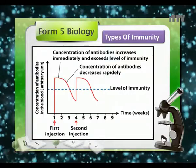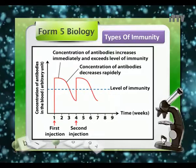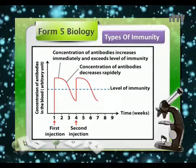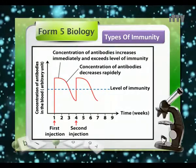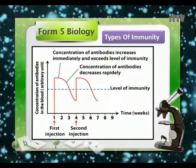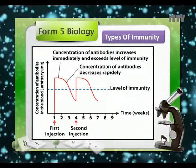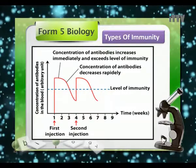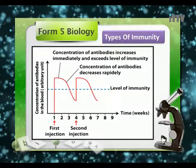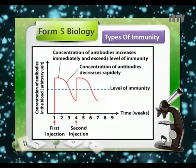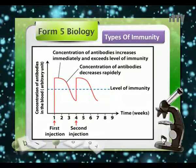For passive artificial immunity, a ready-made antibody or anti-serum is injected into the individual's body. With the first injection, the concentration of antibodies increases immediately and exceeds the level of immunity, but drops down very fast. By the third week, it has dropped below the level of immunity. That is why a second injection must be given in the fourth week to again drastically increase antibody concentration — but they will again decrease within one week because antibodies break down and are not replaced.